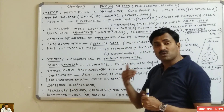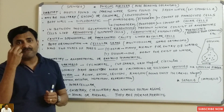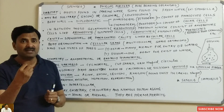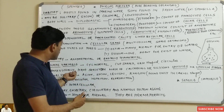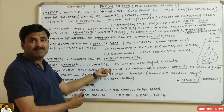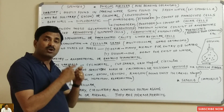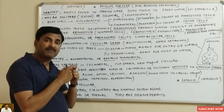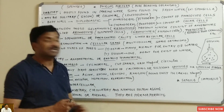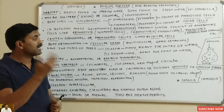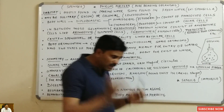Sponges usually have a skeleton, with only a few sponges lacking one. This skeleton is made up of spicules, which may be made of calcium carbonate or silica. So the skeleton is composed of calcareous or siliceous spicules, or we can say spongin fibers.